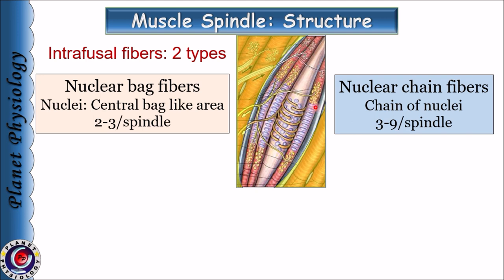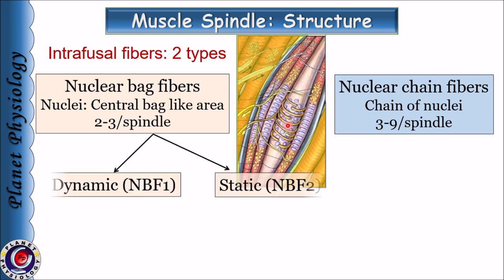The two types of intrafusal fibers are nuclear bag fibers and nuclear chain fibers. In the case of nuclear bag fibers, the central portion is dilated to form a bag-like structure which contains nuclei. There are about two to three nuclear bag fibers in each spindle. Nuclear bag fibers are of two types: dynamic and static.